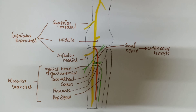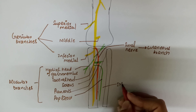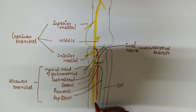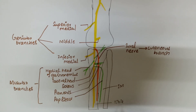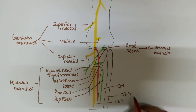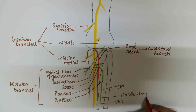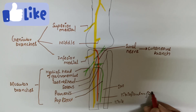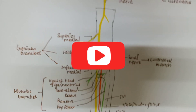The branch which supplies the popliteus also supplies the interosseous membrane, the tibia, and the tibiofibular joint. This is all about the tibial nerve.